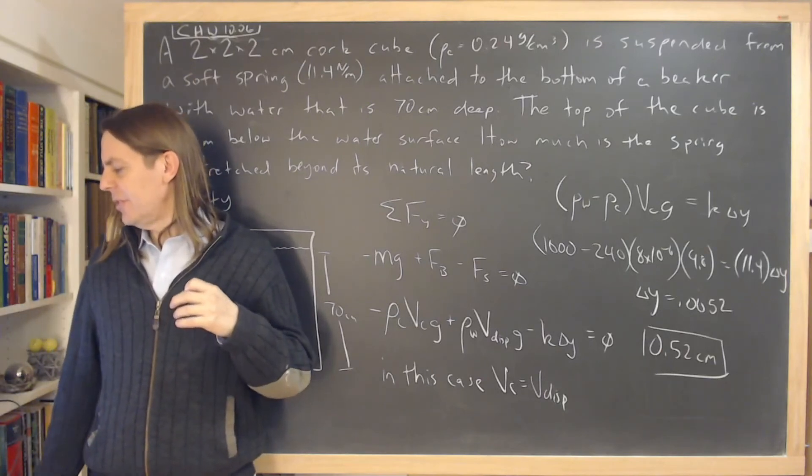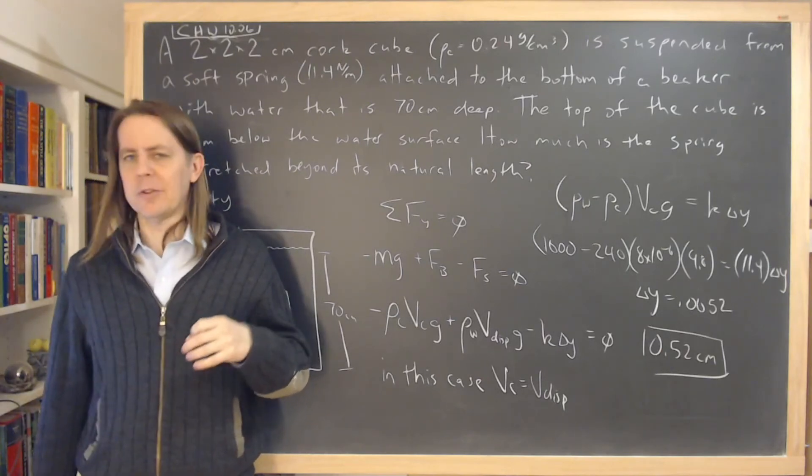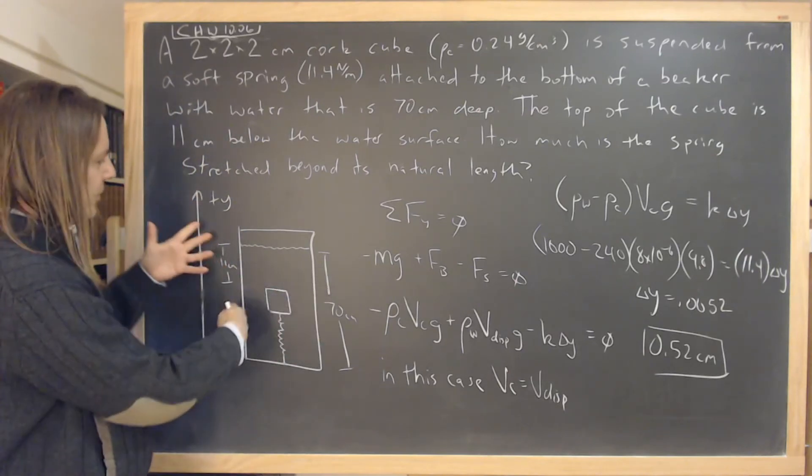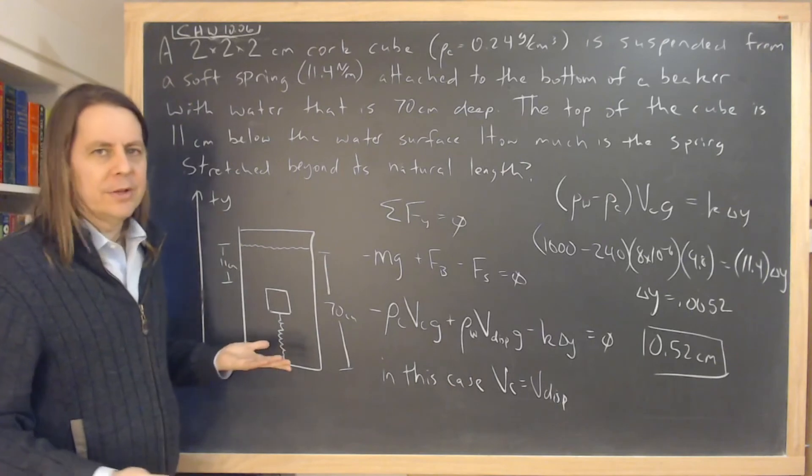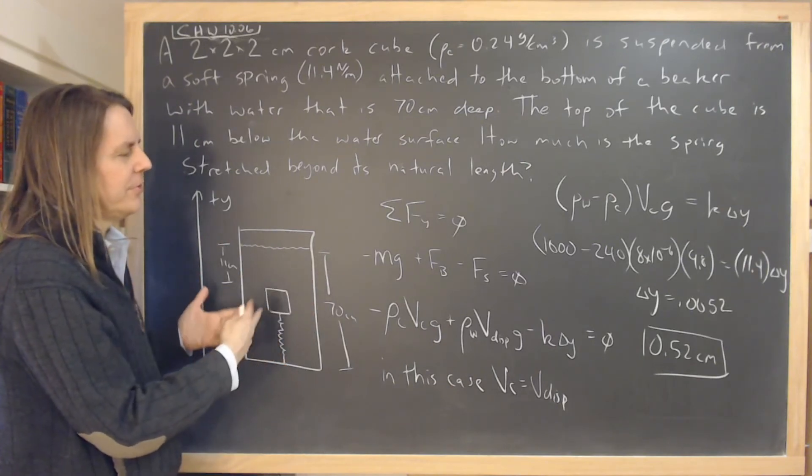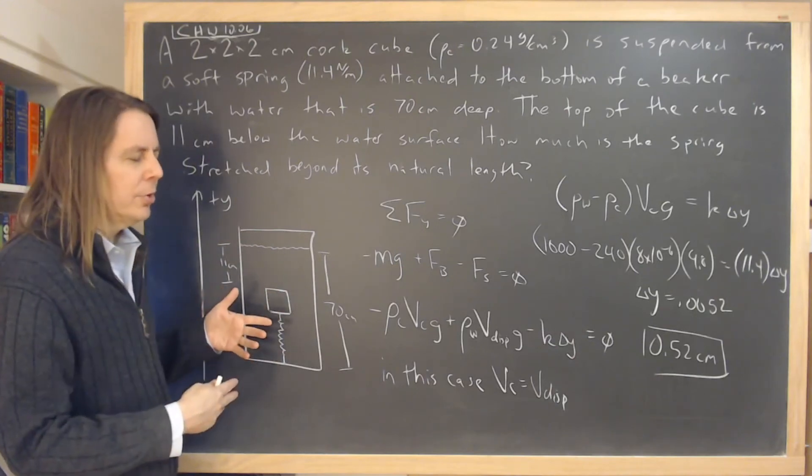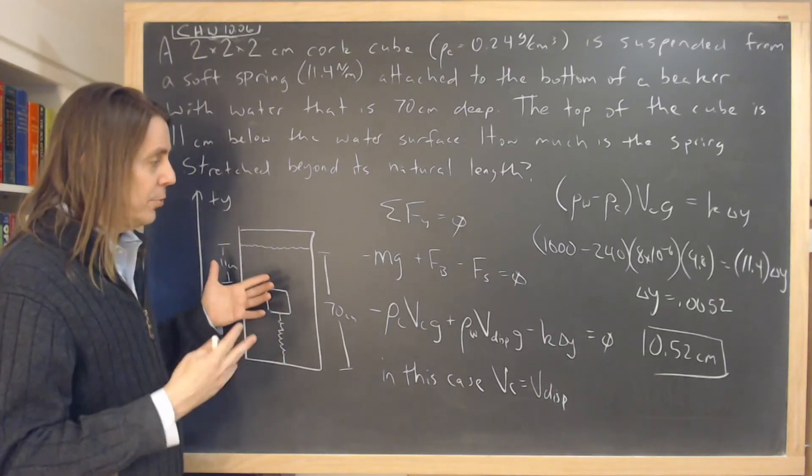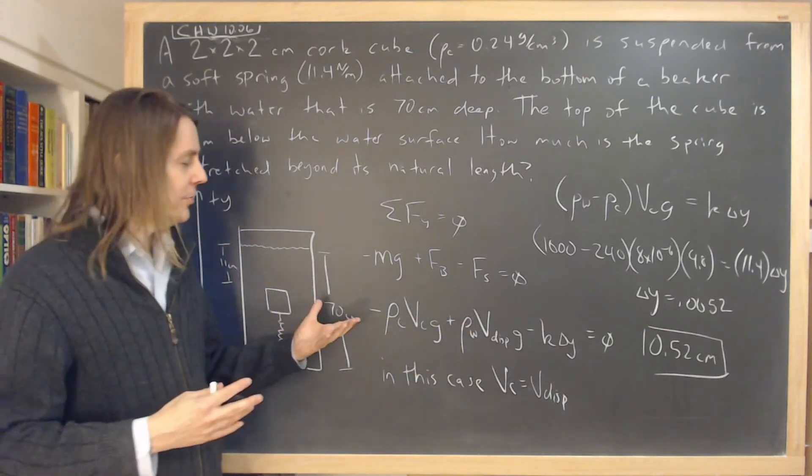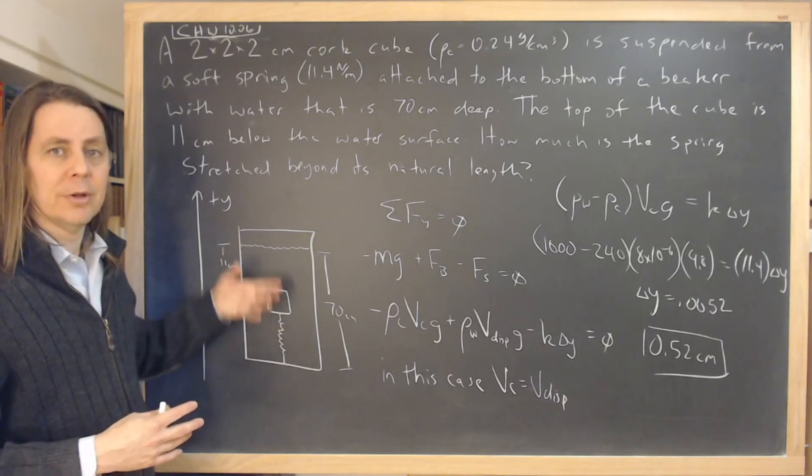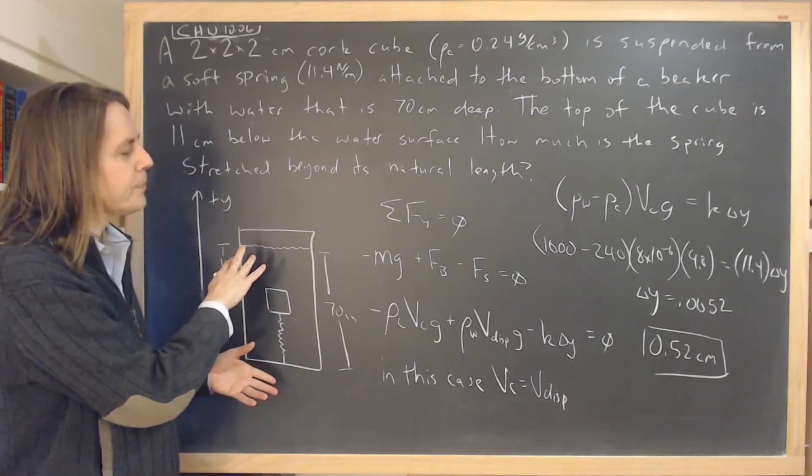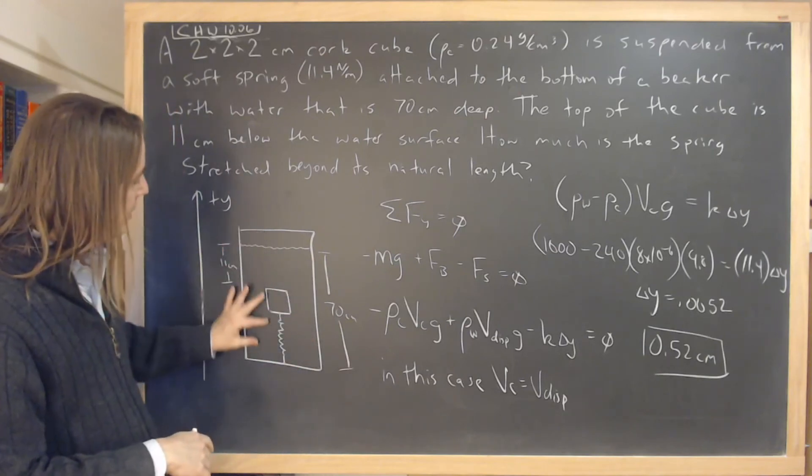There's a follow-up question that asks, does the depth of the cube affect the buoyant force? And that's kind of getting at why did we give you all these numbers? Does it matter? 70 centimeters, 11 centimeters? And really it doesn't. We just gave you those to help you think about that a little bit for the second question. It doesn't matter. And the answer is no. So the buoyant force is always simply the weight of the fluid that was displaced. And the weight of the fluid doesn't depend on the depth, assuming that the fluid has a constant density because it's incompressible.